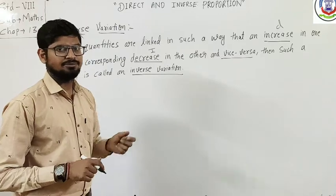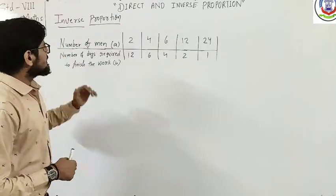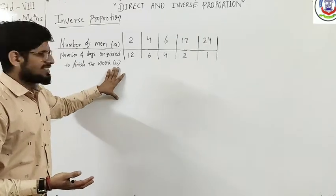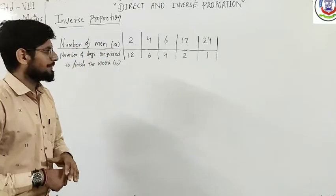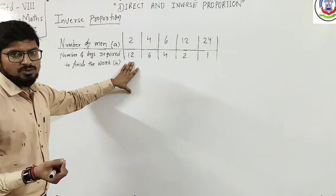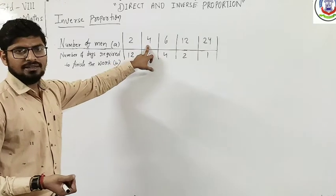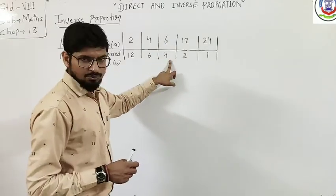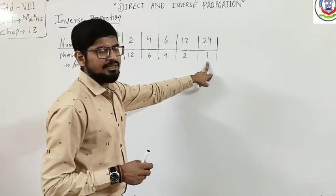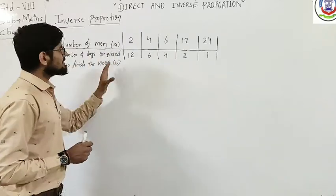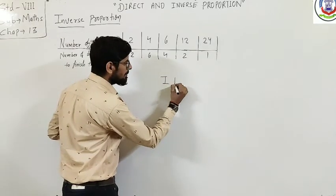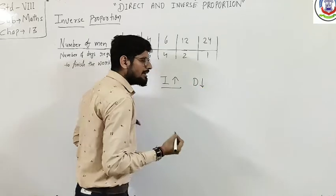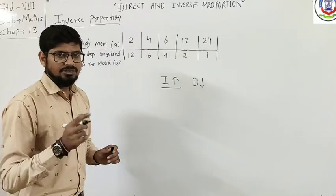Let's understand an example. If you have a number of men and work, the number of days required to finish that work is represented by B, and the number of men is represented by A. When the number of men is 2, it takes 12 days. When the number of men is 4, it takes 6 days. When it's 6 men, 4 days. And when there are 24 men, it takes only 1 day. So as the number of men increases, the number of days of work decreases. This demonstrates inverse proportion.